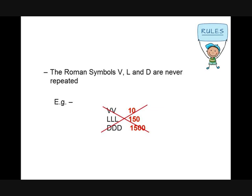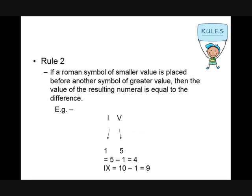For example, we cannot write ten like this, 150 like this, or fifteen hundred like this. Rule two: if a Roman symbol of smaller value is placed before another symbol of greater value, the value of the resulting numeral is equal to their difference. For finding the value of the given symbol, we need to subtract the value of the left symbol from the value of the right symbol. Thus, five minus one equals four, and ten minus one equals nine.